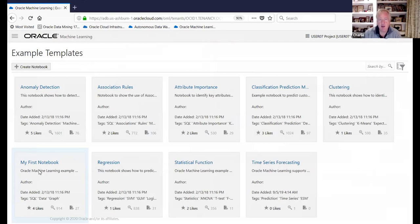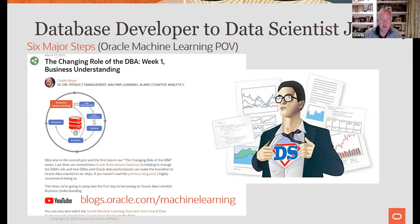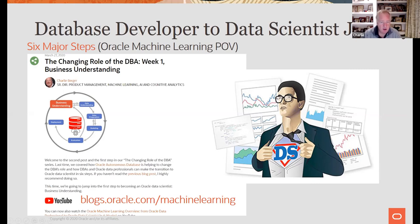To get started, there are a number of example notebooks for anomaly detection, market basket association rules, attribute importance, and so on. We'll look at these in a minute. They're templates you can use to learn how to do this stuff. At the end of all this, we're working on an Oracle Machine Learning certification program so you can become an Oracle data scientist.